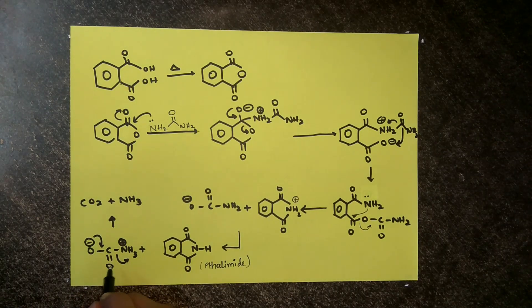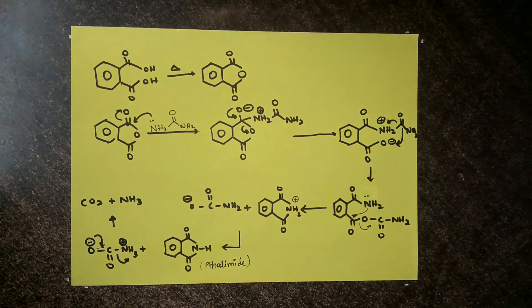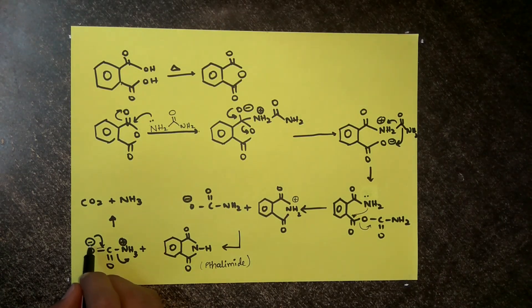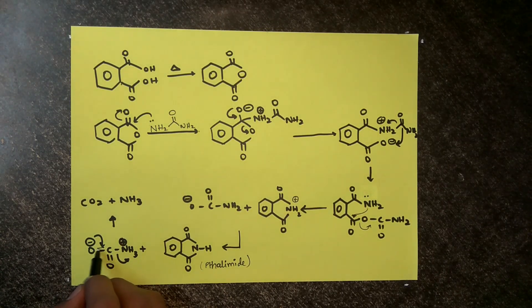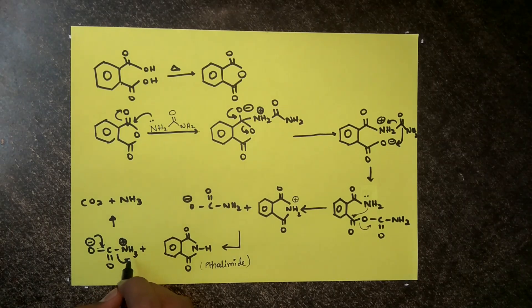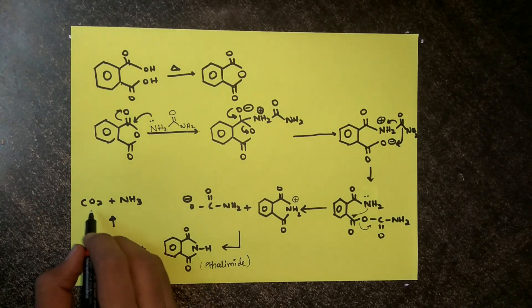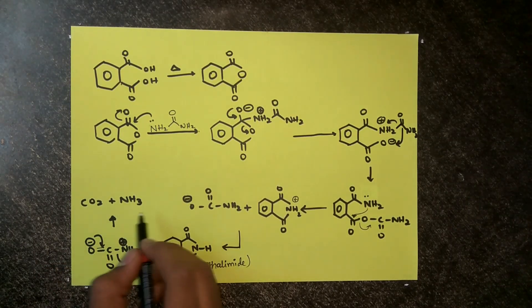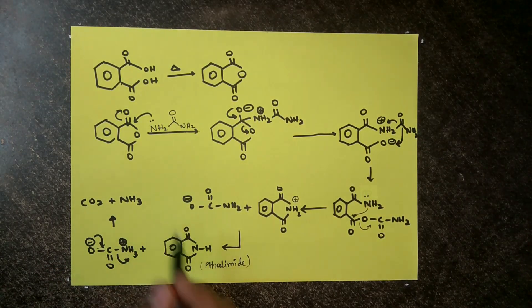The CO-NH3+ group: here the oxygen with negative charge forms a pi bond expelling this NH3 group, and it forms CO2 and NH3.